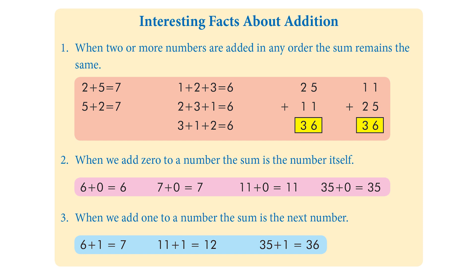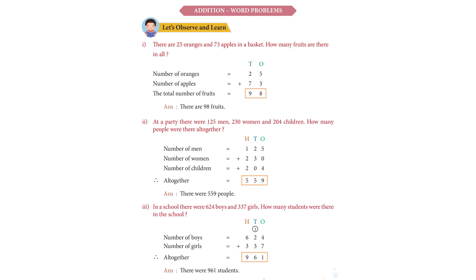The last interesting fact about addition: when we add one to a number, the sum is the next number. Any number plus 1 gives the next number — 1 plus 1 is 2, 2 plus 1 is 3, 3 plus 1 is 4, 100 plus 1 is 101. Any number plus 1, you will get the number that comes after it. Look at the examples given for you to practice, and also the examples in page number 84. There are more sums for you to do and solve in your notebook. By the end of this, you will be a champion in addition.